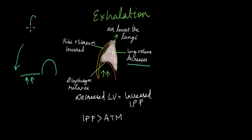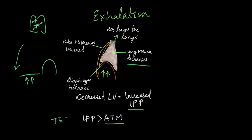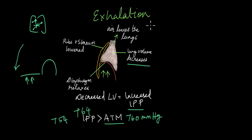As the lung volume decreases, the air inside the lungs has less space to move around and bumps into each other more frequently, causing an increased intrapulmonary pressure. So the pressure inside the lungs rises to about 764 mmHg, while atmospheric pressure remains at 760 mmHg. Since pressure inside is now greater than outside, air is pushed out of the lungs — this is exhalation.